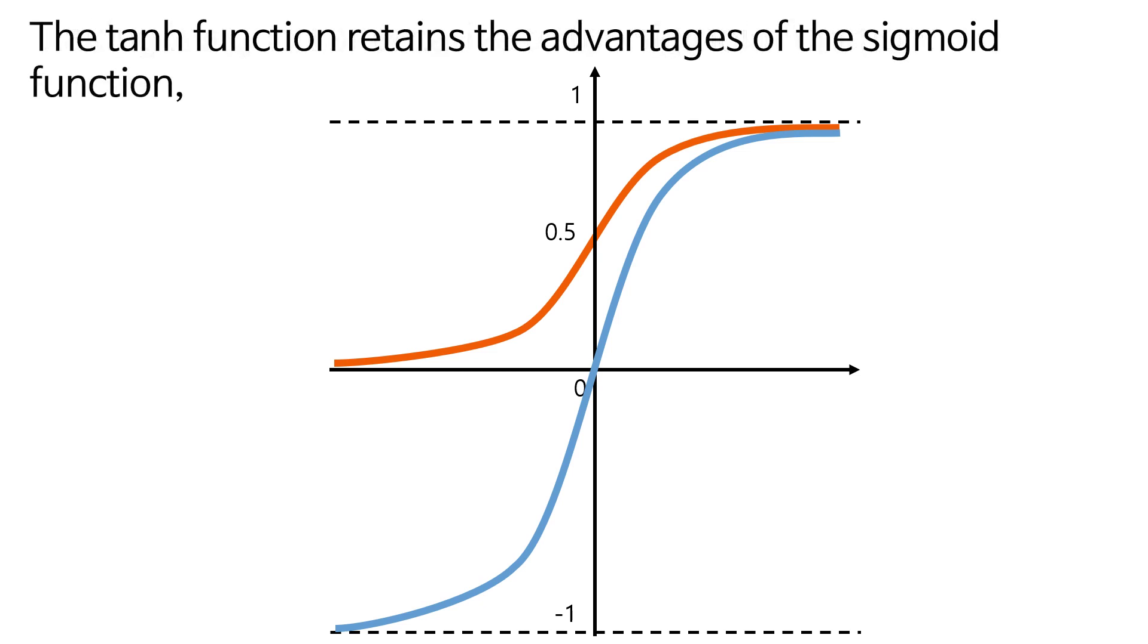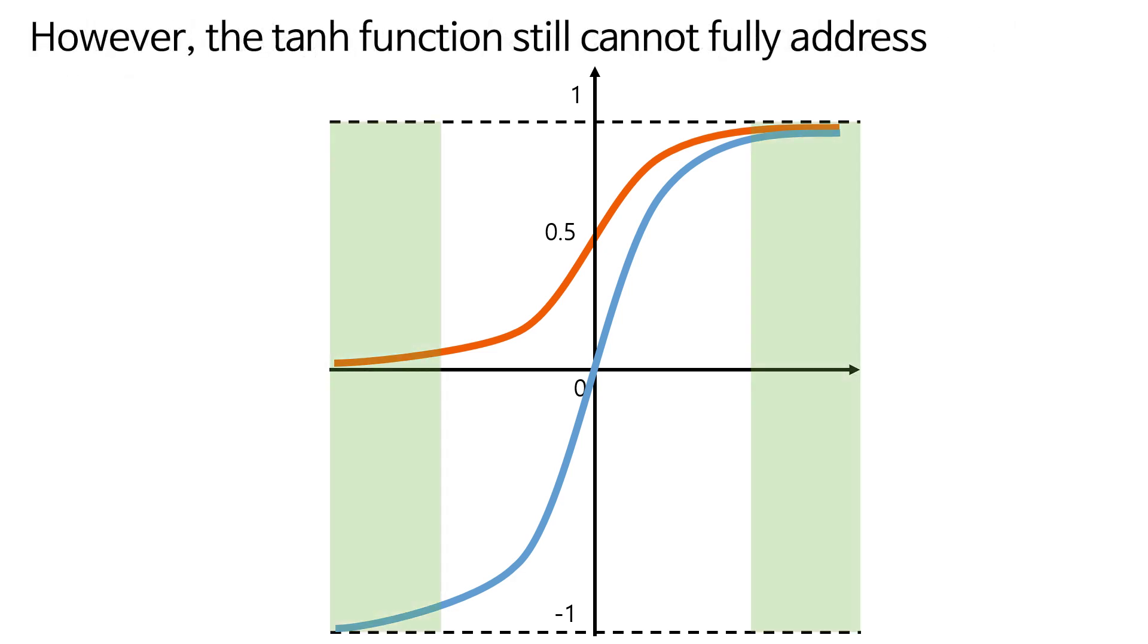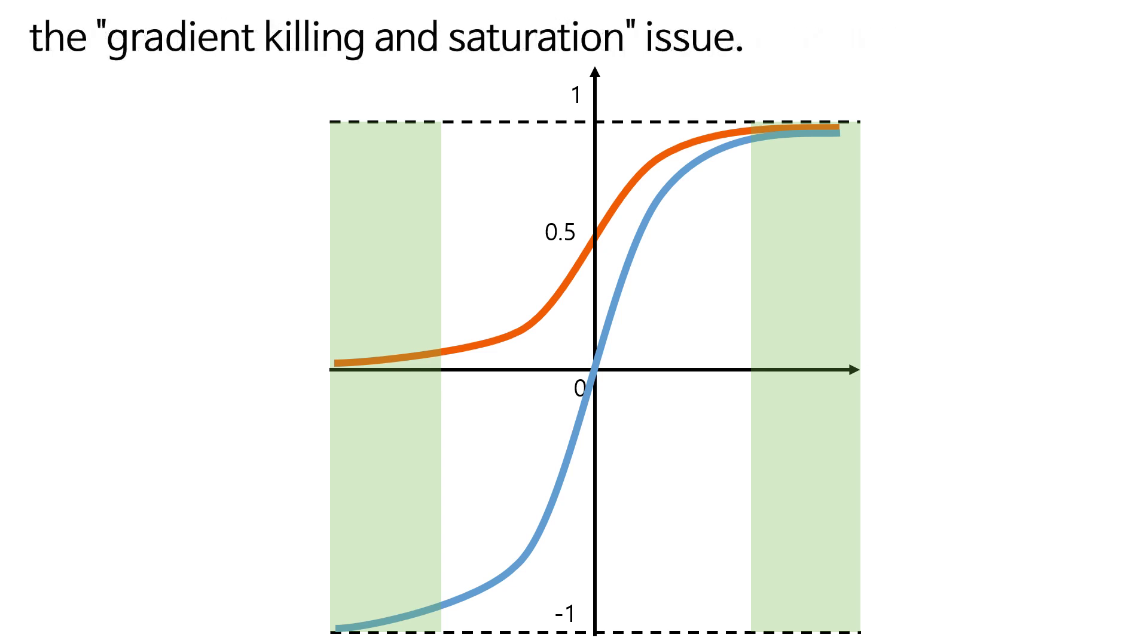The hyperbolic tangent function retains the advantages of the sigmoid function, while addressing the drawback of the sigmoid function, which is the non-zero-centered problem. However, the hyperbolic tangent function still cannot fully address the gradient killing and saturation issue.